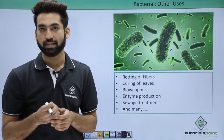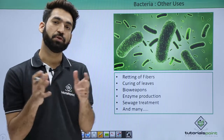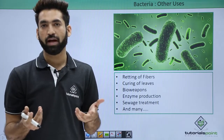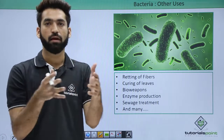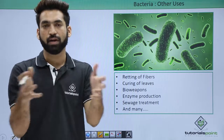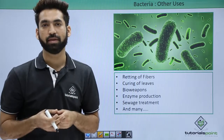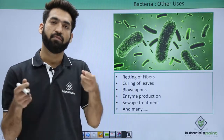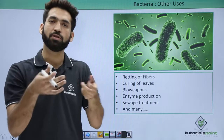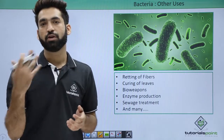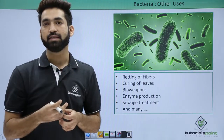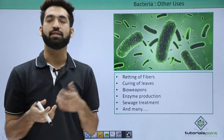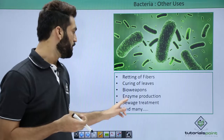Bio weapons — you must have heard about that. The anthrax-causing bacteria is Bacillus anthracis. Bacillus anthracis was once used as a bio weapon. In bio-war, you want to kill people, and bacteria were used to cause diseases like anthrax in enemies. These are called bio wars.